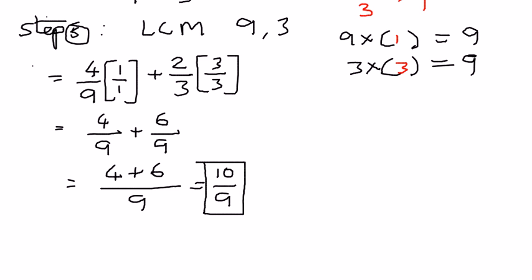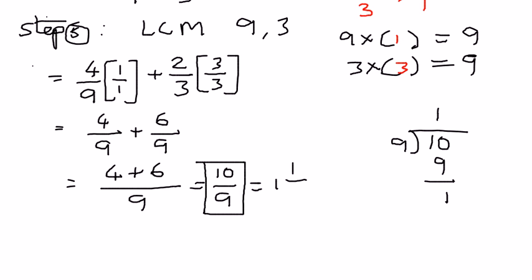The answer is an improper fraction — 10 over 9 — where the numerator is larger than the denominator. We can also express this as a mixed number: 9 goes into 10 once with remainder 1, so it equals 1 and 1 over 9. Therefore, this complex fraction can be expressed as 10 over 9, or as the mixed number 1 and 1 over 9. In my next presentation, we shall look at more examples of simplifying complex fractions using order of operations.